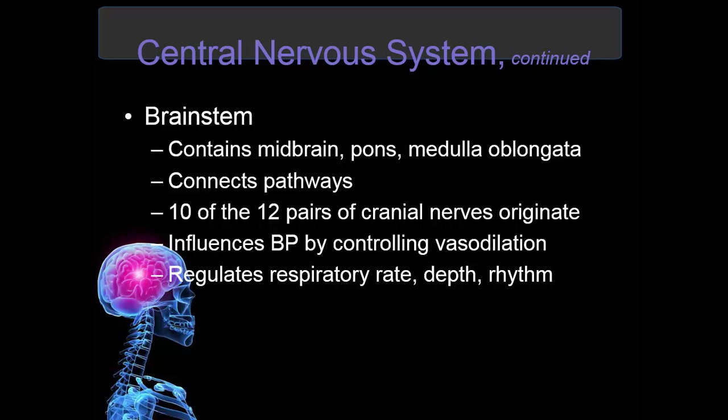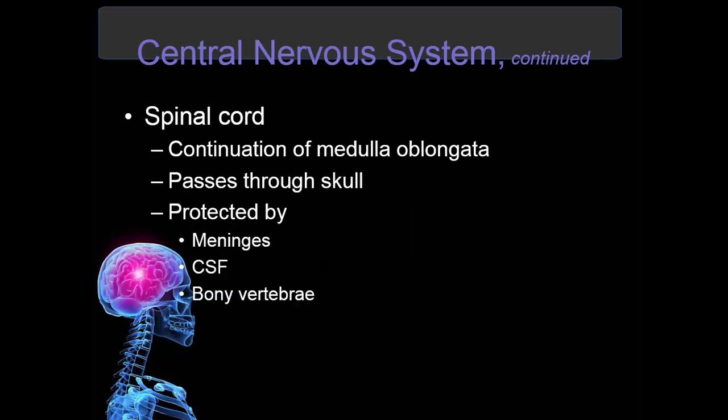Ten of the twelve pairs of cranial nerves originate in the brain stem. It influences blood pressure by controlling vasodilation and regulates respiratory rate, depth, and rhythm. The reticular formation, located in the brain stem, contains neurons that integrate sensory information from the peripheral nervous system and relay information to the cerebral cortex. The upper part of the reticular formation consists of a network of fibers called the RAS, or reticular activating system, which is involved in the sleep-wake cycle. The spinal cord is an extension of the brain stem — specifically the medulla oblongata — passing through the skull, protected by the meninges, cerebral spinal fluid, and bony vertebrae. It transmits impulses to and from the brain.